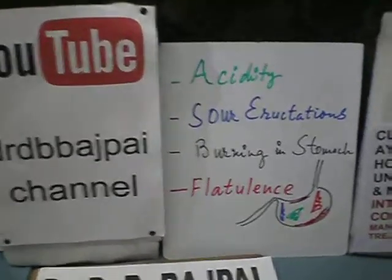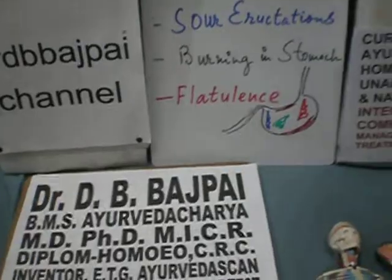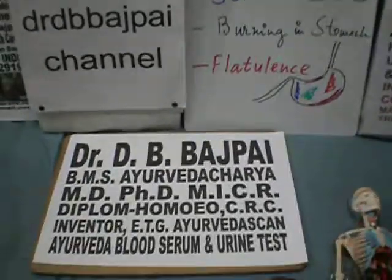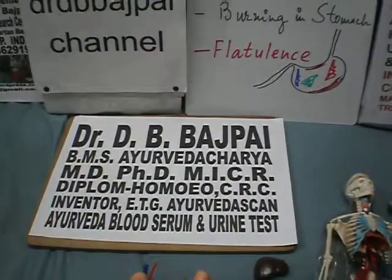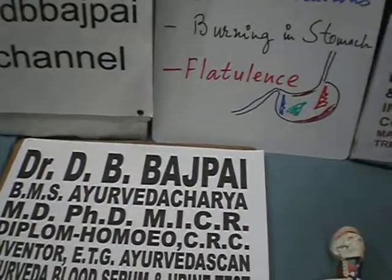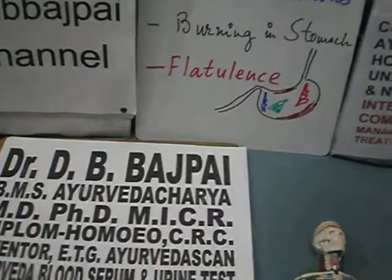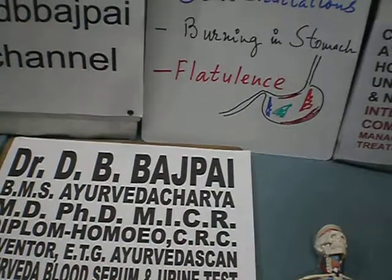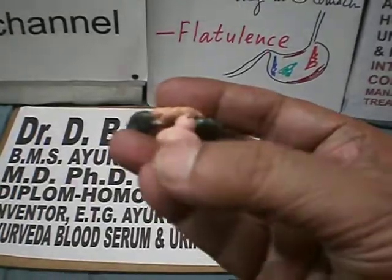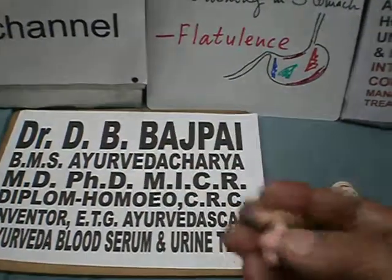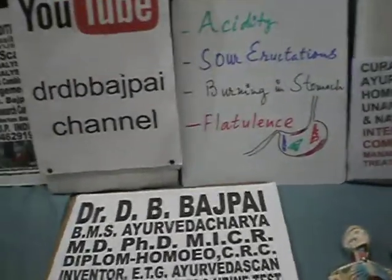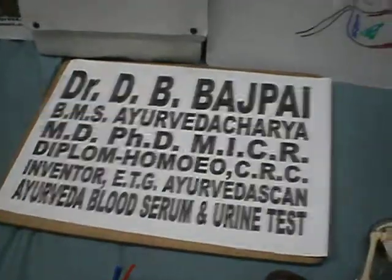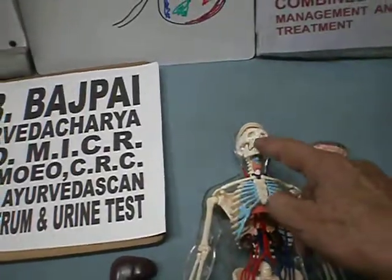If there is excessive acidity, sour eructations, burning in the stomach, or flatulence — flatulence means gaseous formation inside the intestine, both large and small intestine, and the passing of gas from the anus. Flatulence occurs either as gas passing through the anus or as eructations through the mouth.